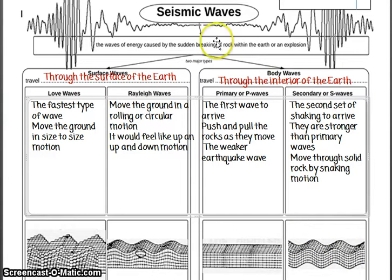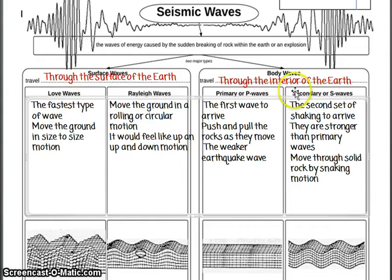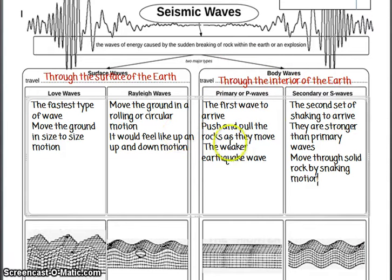So those are our seismic waves — four major types: love waves and Rayleigh waves, which are surface waves; and primary and secondary waves, which are body waves. The primary and secondary waves are the ones we are most concerned with because they reveal the most information about the planet.